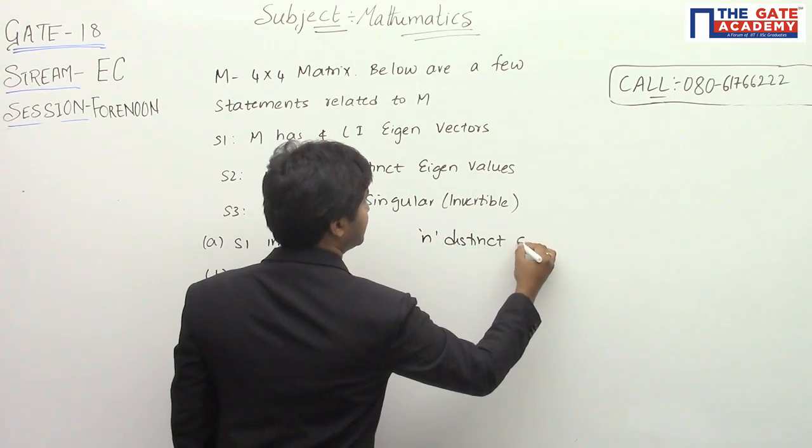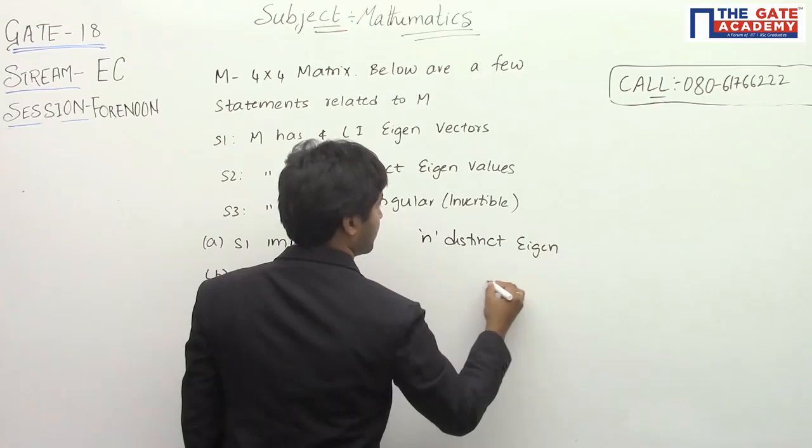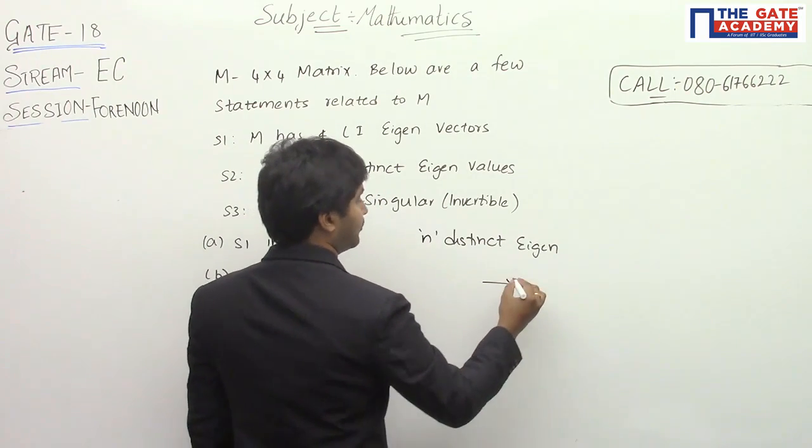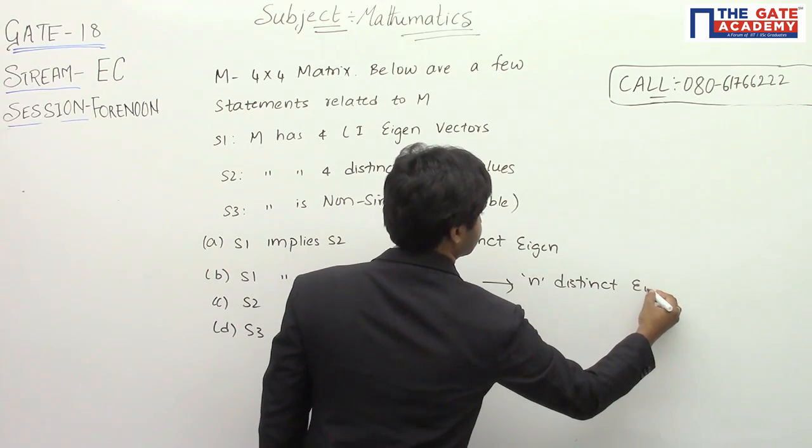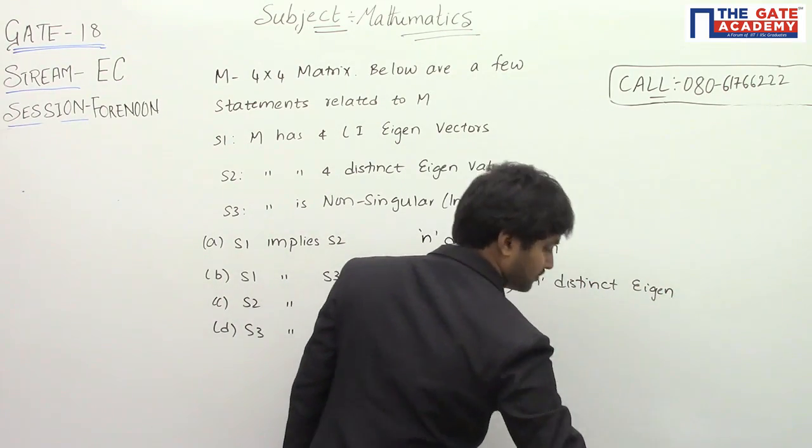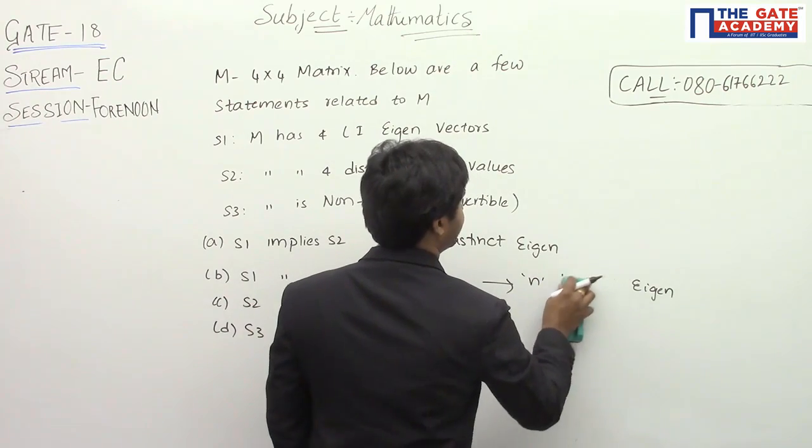Whenever we have n distinct eigenvalues, we will have n distinct eigenvectors. I'm sorry, n linearly independent eigenvectors.